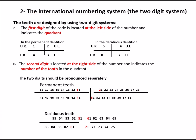In the International Numbering System or two-digit system, the first digit indicates the quadrant: 1 to 4 for permanent dentition and 5 to 8 for temporary dentition. The left digit indicates the quadrant and the right digit indicates the number of the tooth within the quadrant.